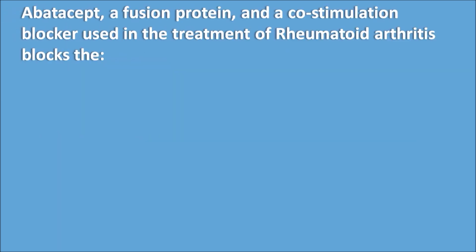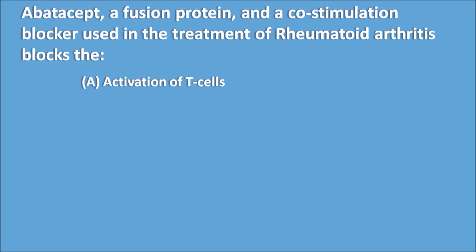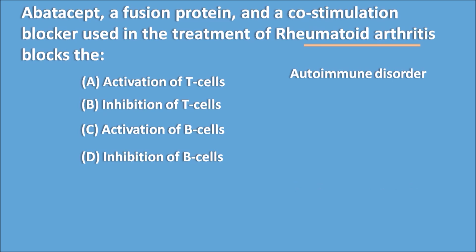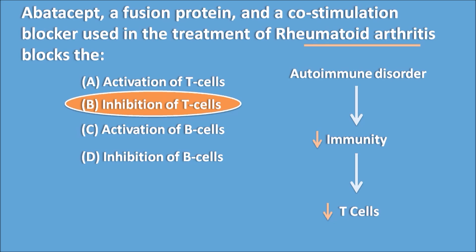Question ten: abatacept, a fusion protein and co-stimulation blocker used in the treatment of rheumatoid arthritis, blocks A. activation of T-cells, B. inhibition of T-cells, C. activation of B-cells, or D. inhibition of B-cells. Rheumatoid arthritis is an autoimmune disorder, so we need to decrease immunity by inhibiting T-cells. Therefore, the correct answer is B: inhibition of T-cells.